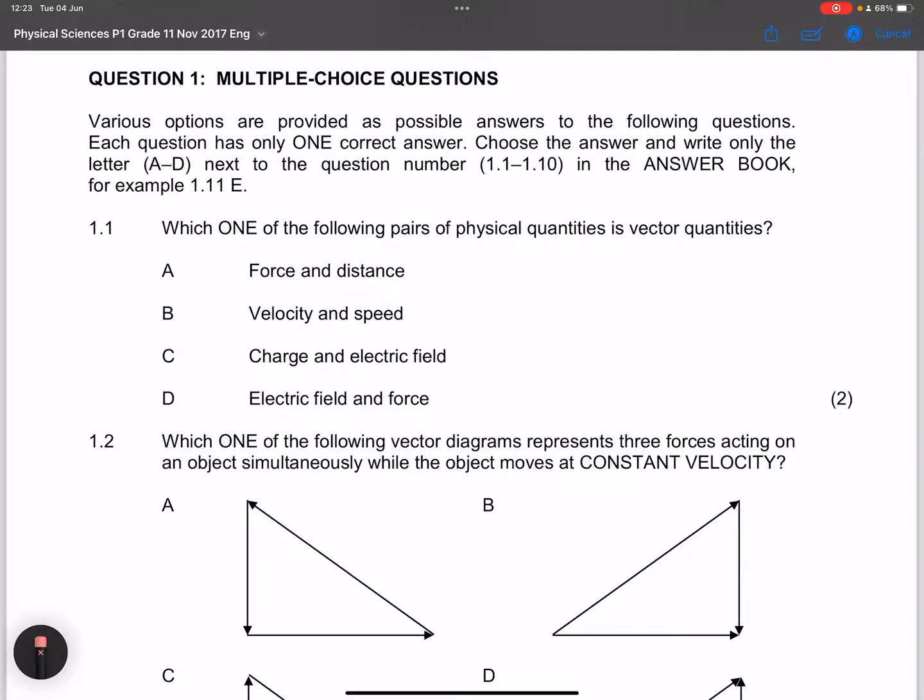Starting with the multiple choice sections. They say which one of the following pairs of physical quantities is vector quantities. Note that both of them need to be vector quantities.